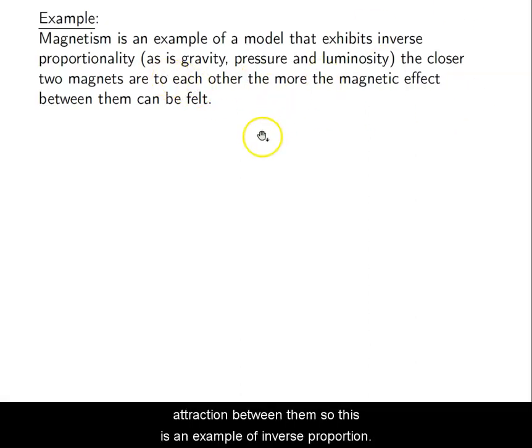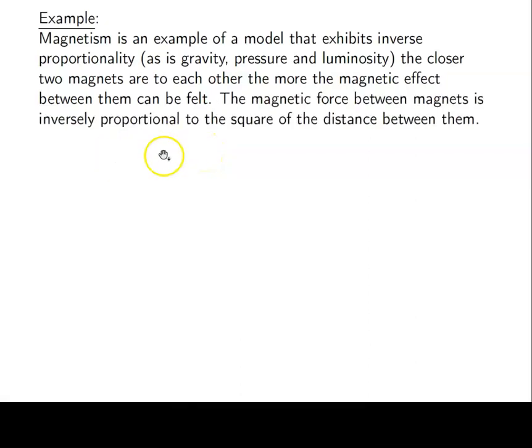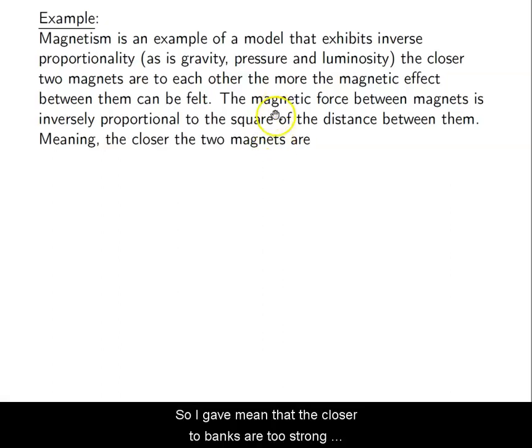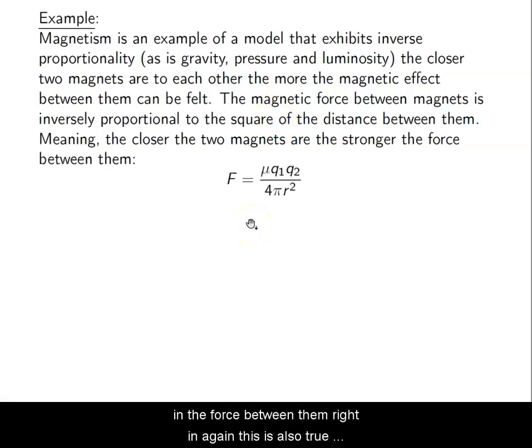So this is an example of inverse proportionality. The way that we say this is that the magnetic force between them is inversely proportional to the square of the distance between them. So that means that we have a squared value. So if they're very, very close, the distance between them is squared, which means it's even stronger together. The attractive force, so again, meaning that the closer the two magnets are, the stronger the force between them.